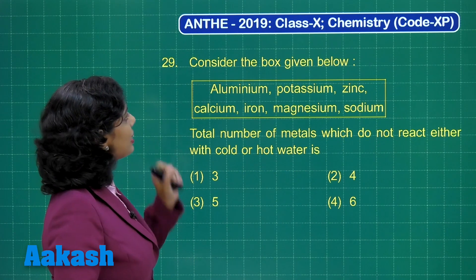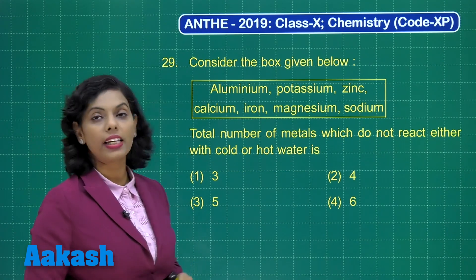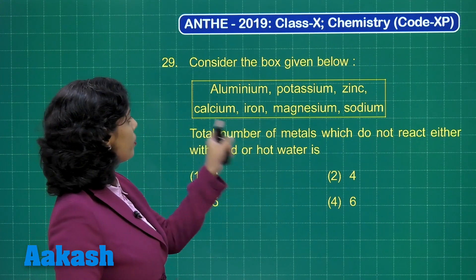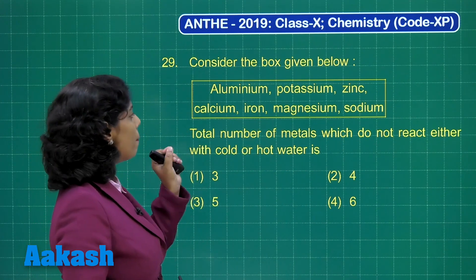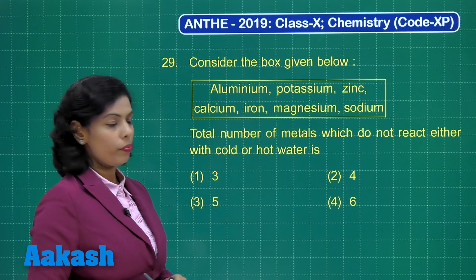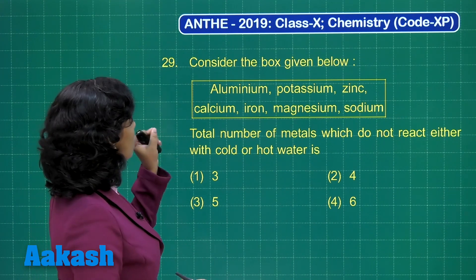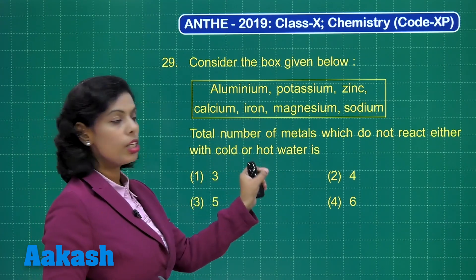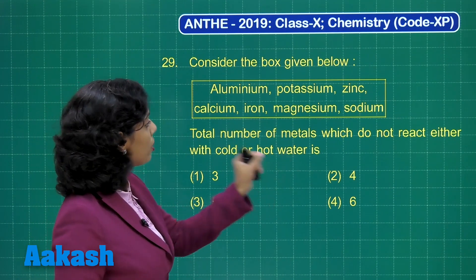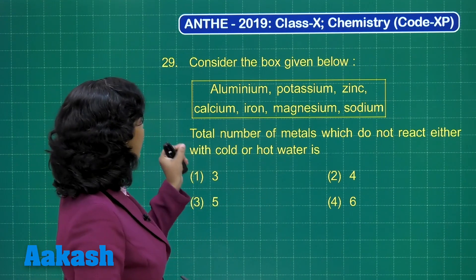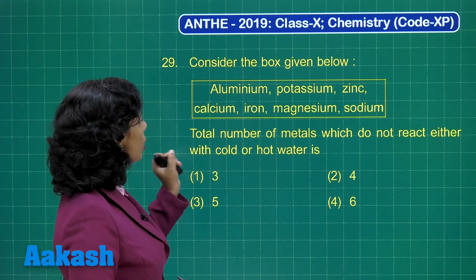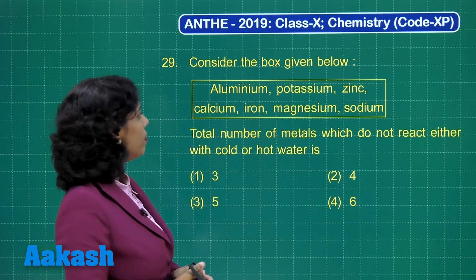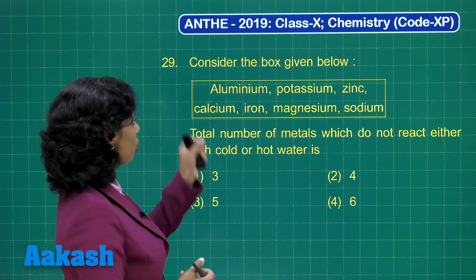Now the turn is for question number 29. Let's have a look. Consider the box given below — we have a box in which certain metals are given. The question is: what is the total number of metals which do not react with either cold water or hot water?